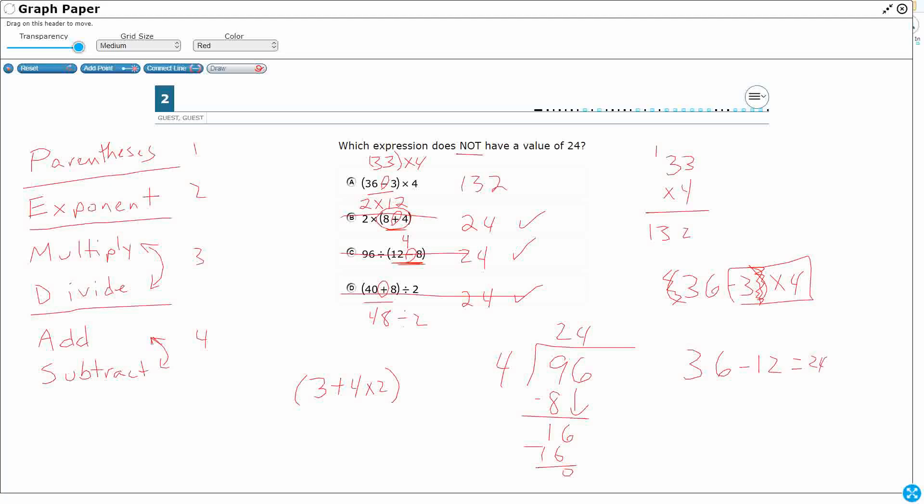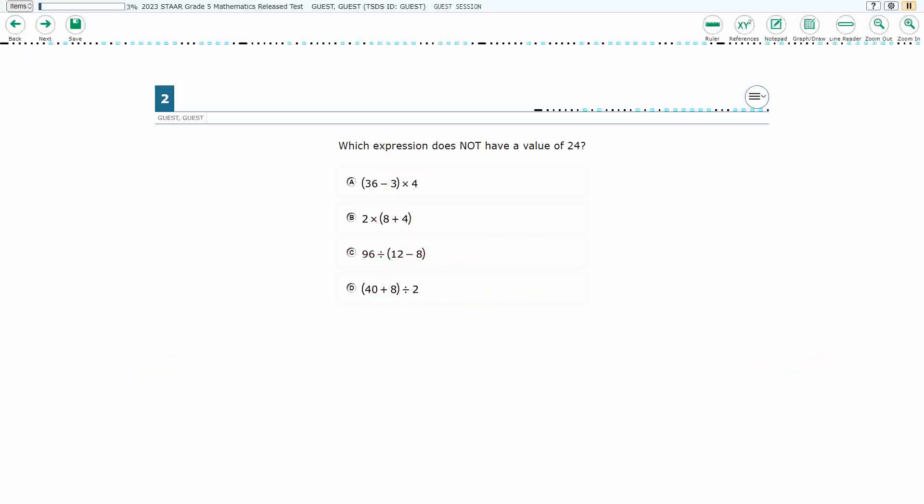It would need to be 36 minus and then 3 times 4 is 12. That's where the 24 comes in. But the parentheses changes it. We have to do that first, the 36 minus 3. So my answer here is A.